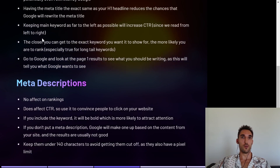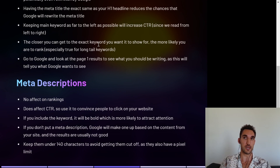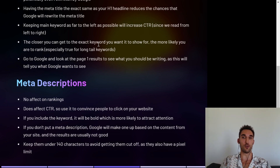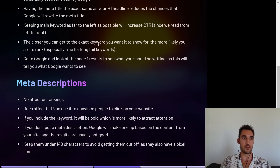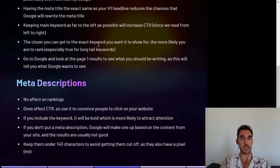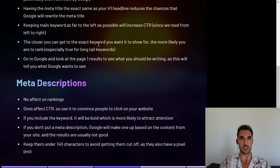The closer you can get the exact keyword you want the page to show up for in the meta title, the more likely you are to rank. This is especially true for long-tail keywords, which can be harder to target because you need to get the whole thing in. But if you can get the whole long-tail keyword in the meta title — say you've made a specific page for it — you stand a higher chance of actually ranking.